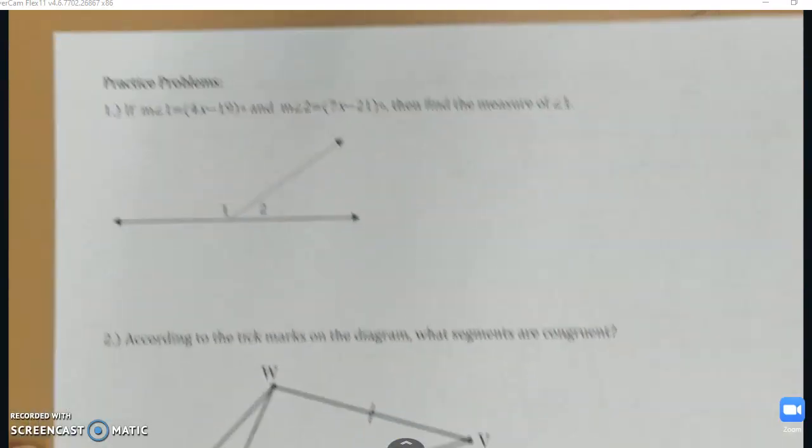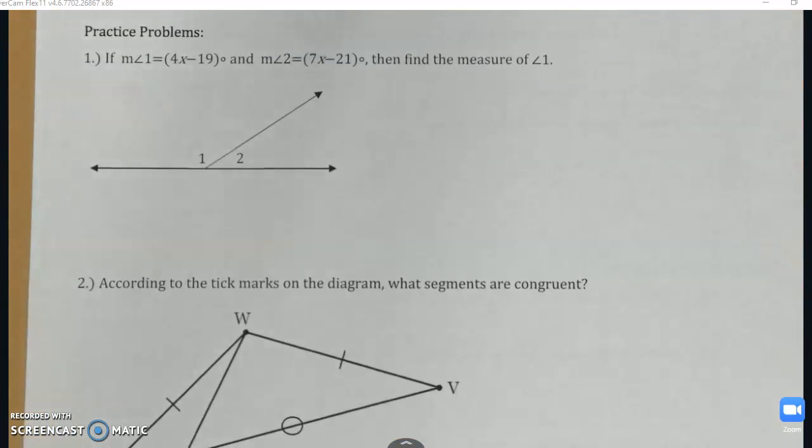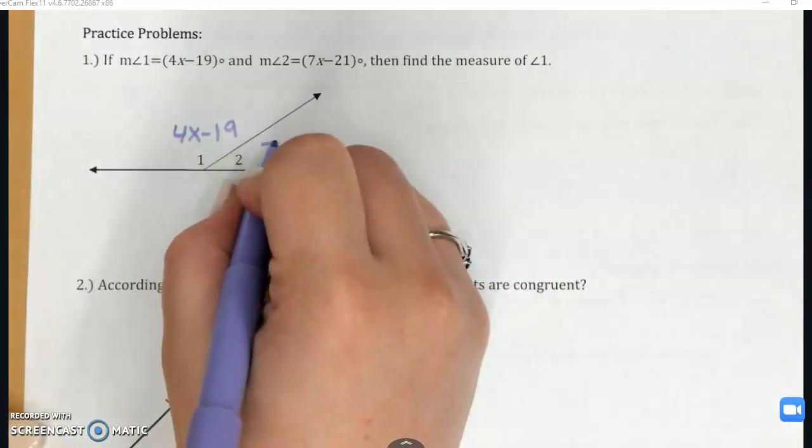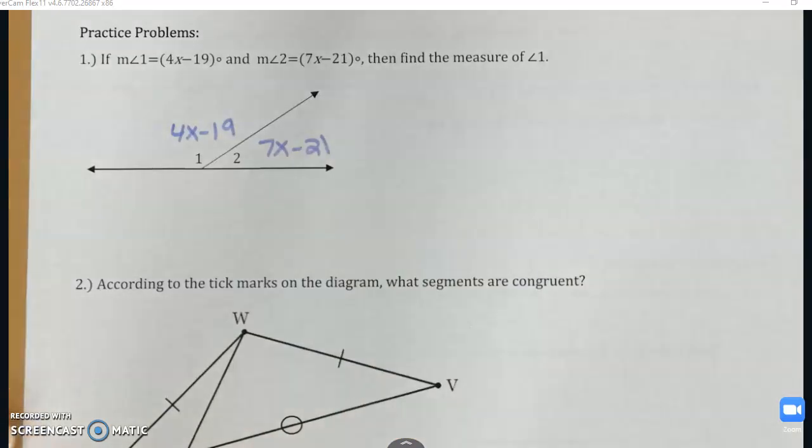So let's put some of these assumptions to good use. On number one, I'm told angle one is 4X minus 19. And angle two is 7X minus 21. Find the measure of angle one. Well, if I'm going to find the measure of angle one, I need to know what X is. So we're going to have to use this given information to write an equation that will allow me to solve for X.